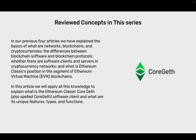Reviewed concepts in this series. In our previous four articles, we have explained the basics of what are networks, blockchains and cryptocurrencies; the differences between blockchain software and blockchain protocols; whether there are software clients and servers in cryptocurrency networks; and what is Ethereum Classic's position in the segment of Ethereum virtual machine blockchains. In this article, we will apply all this knowledge to explain what CoreGeth — also spelled CoreGeth with no space — software client is, and what are its unique features, types and functions.